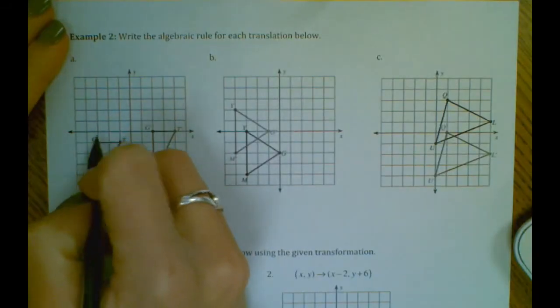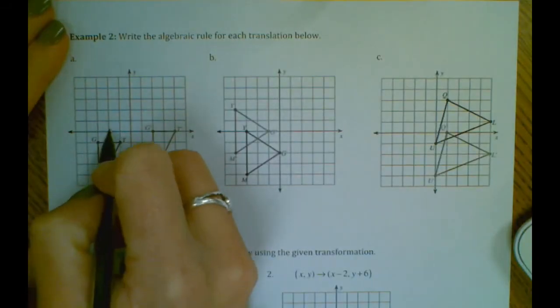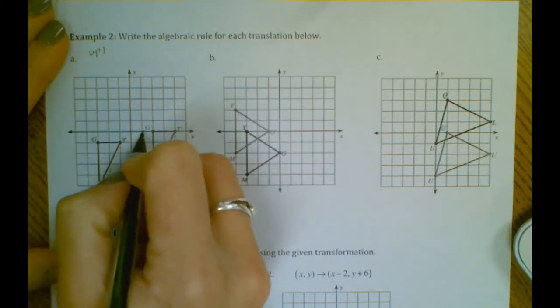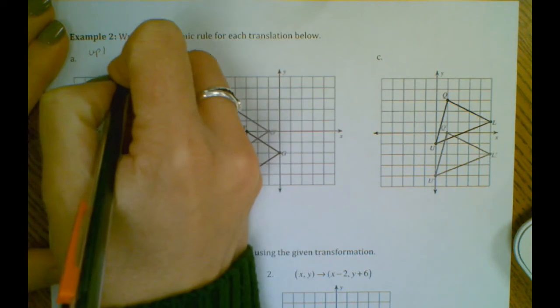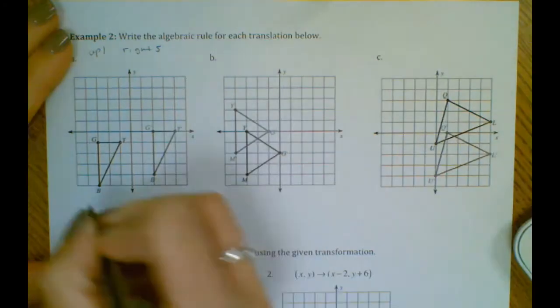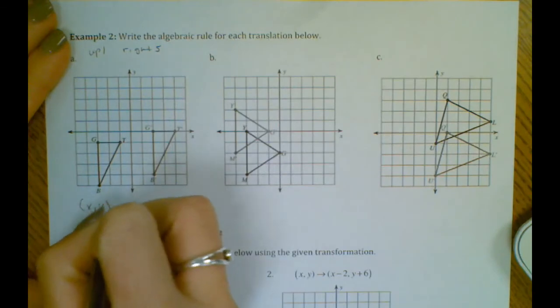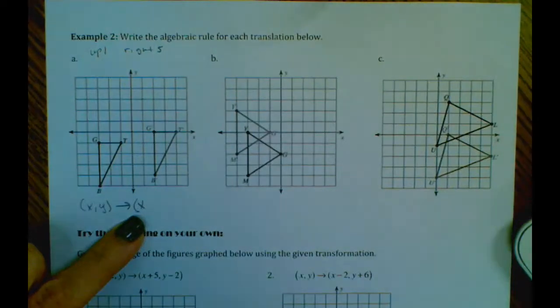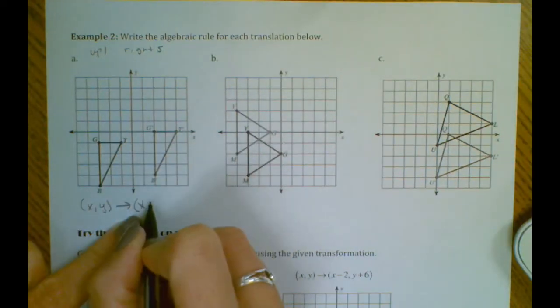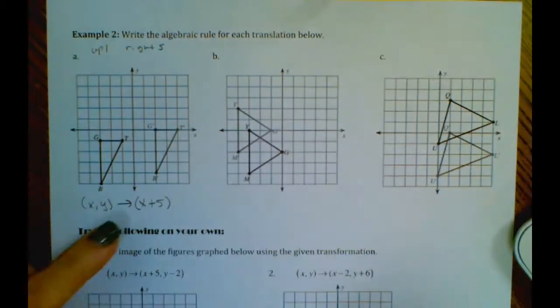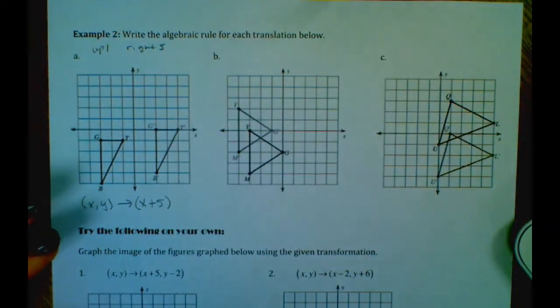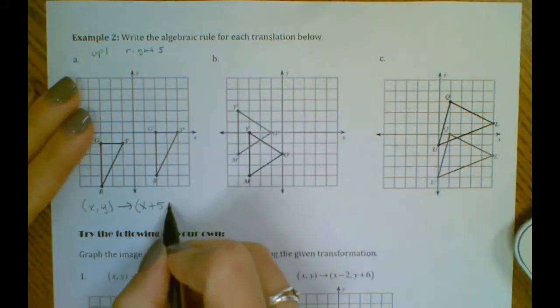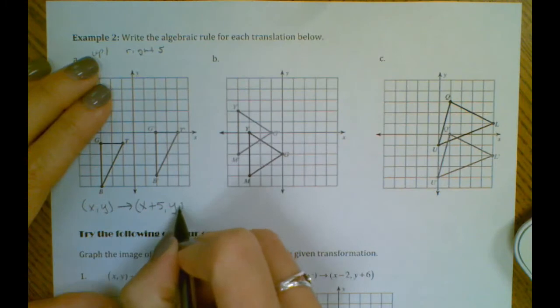So if we look at G, G moved up one and right one, two, three, four, five. So we would say that we took X and we added five and then we take Y and we added one.